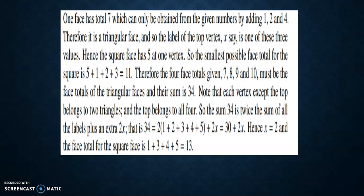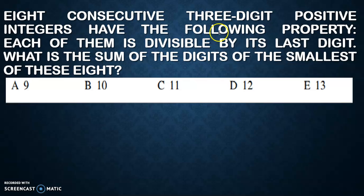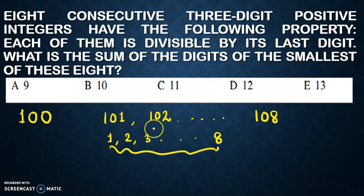Let's see the next question: eight consecutive 3-digit positive integers. If you start from 3-digit numbers, my digits start from 100. They have the property that each of them is divisible by its last digit. If you consider 0, we cannot divide a number by 0, so let's start from 101. Our numbers could be 101, 102 till 108. These are my numbers.